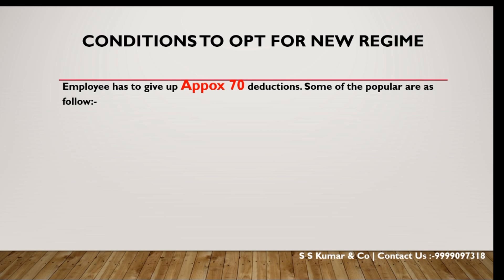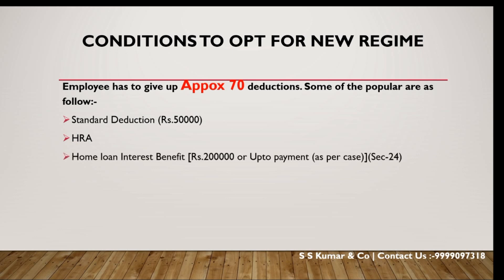Let me discuss some popular deductions that employees give up under the new regime. The basic deduction — the standard deduction of 50,000 — which every employee is allowed, will not be available if you fall into the new regime. Apart from that, HRA exemption is not allowed. Home loan principal deduction is also not allowed, and interest on house property loss cannot be claimed under the new regime.